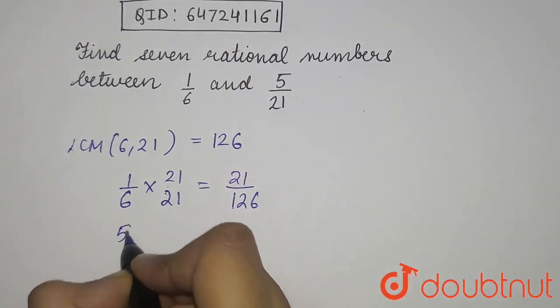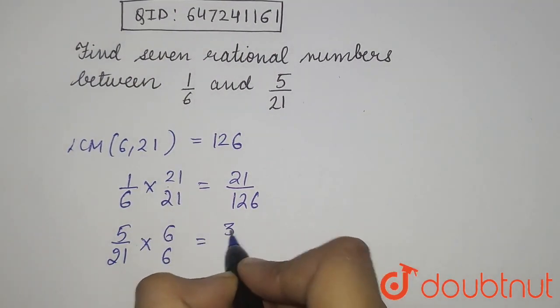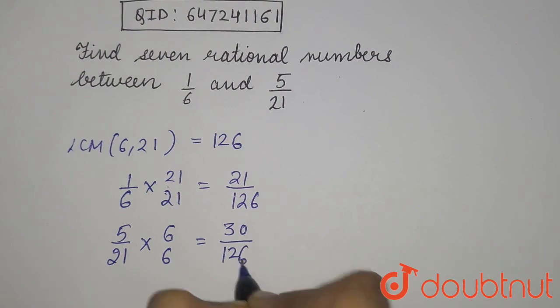Similarly, we will do this with 5 by 21. Into 6 upon 6 equals to 30 by 126.